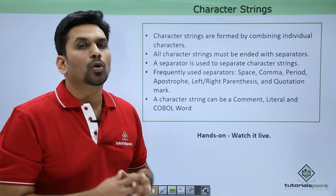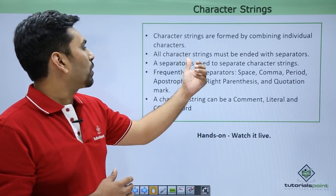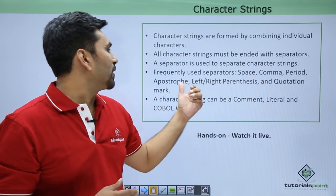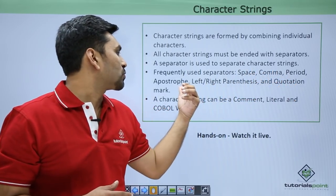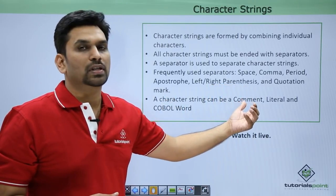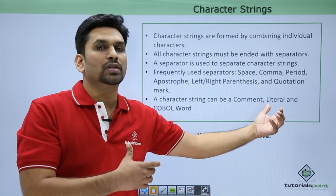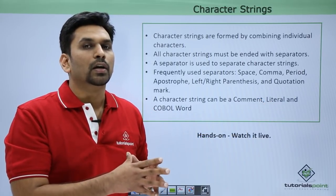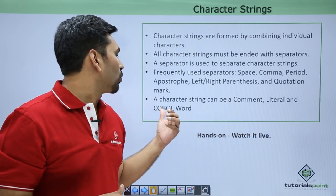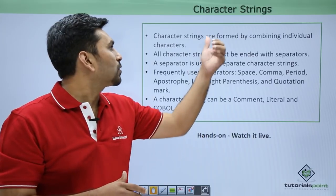Now we have character strings. In COBOL, when you declare user-defined words or want to declare a comment line, we use character strings. A character string must end with separators. Separators are used to separate character strings and can be spaces, comma, period, apostrophe, left/right parenthesis, or quotation mark. A character string can be used as a comment, as a literal — such as when you declare values in the working storage area and assign a value to a variable — or as a COBOL word, like when we declare paragraph names.